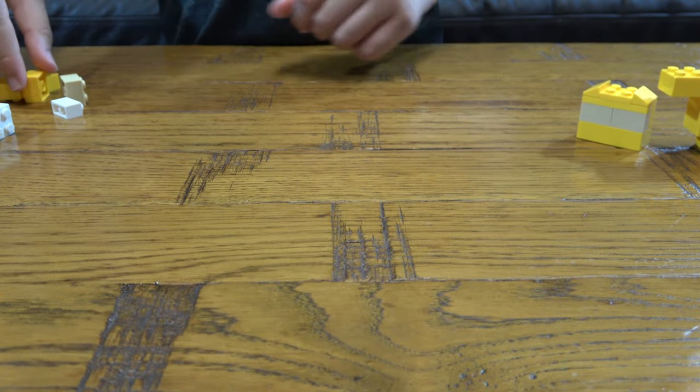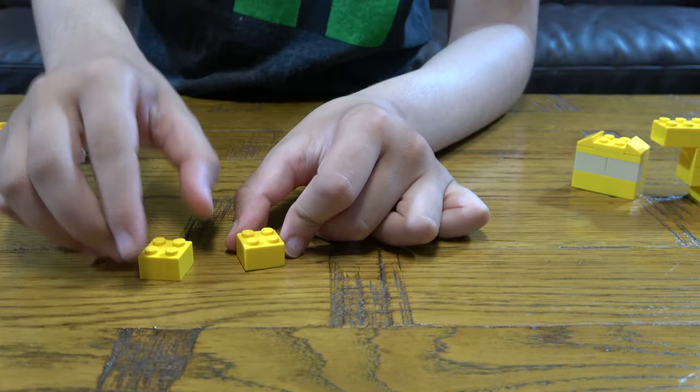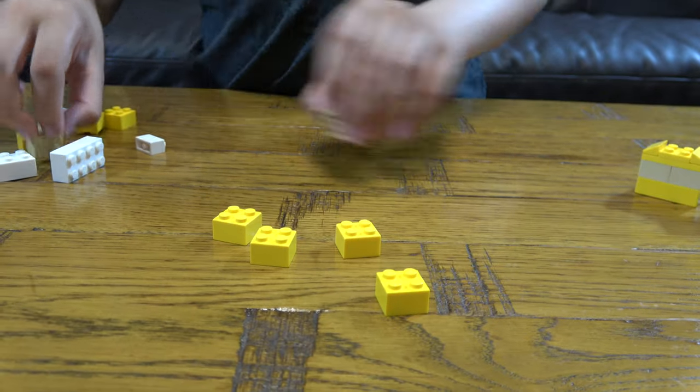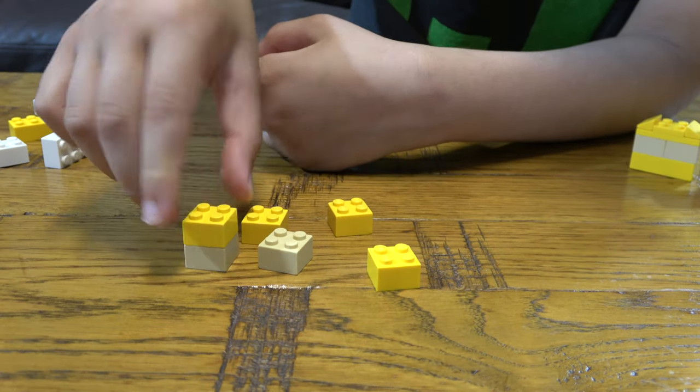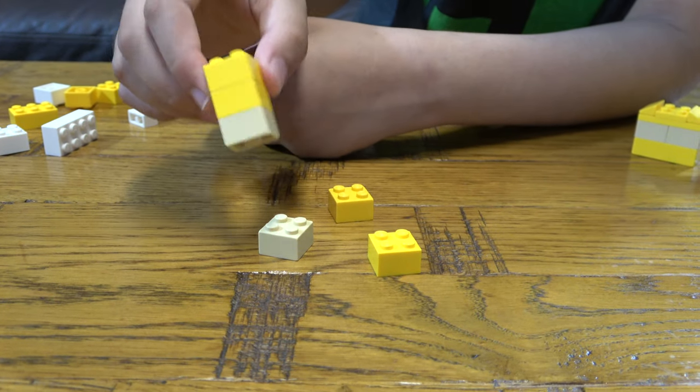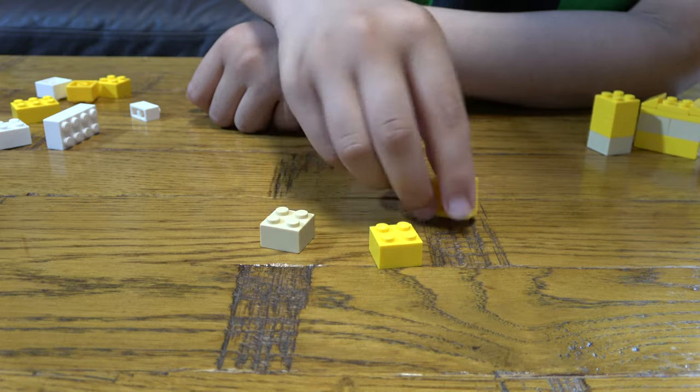And then for the arms, you're going to get two—I'm going to get four two by twos and two two by twos again. That is one arm and then the second arm.